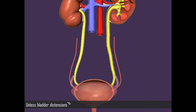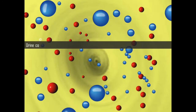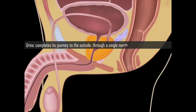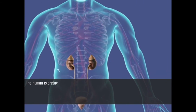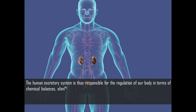However, the lower or external sphincter is under voluntary control, so the reflex can be suppressed by the brain, unless bladder distension becomes acute. Urine completes its journey to the outside through a single narrow tube called the urethra. The human excretory system is thus responsible for the regulation of our body in terms of chemical balances and the elimination of waste and harmful substances, and ultimately our good health.